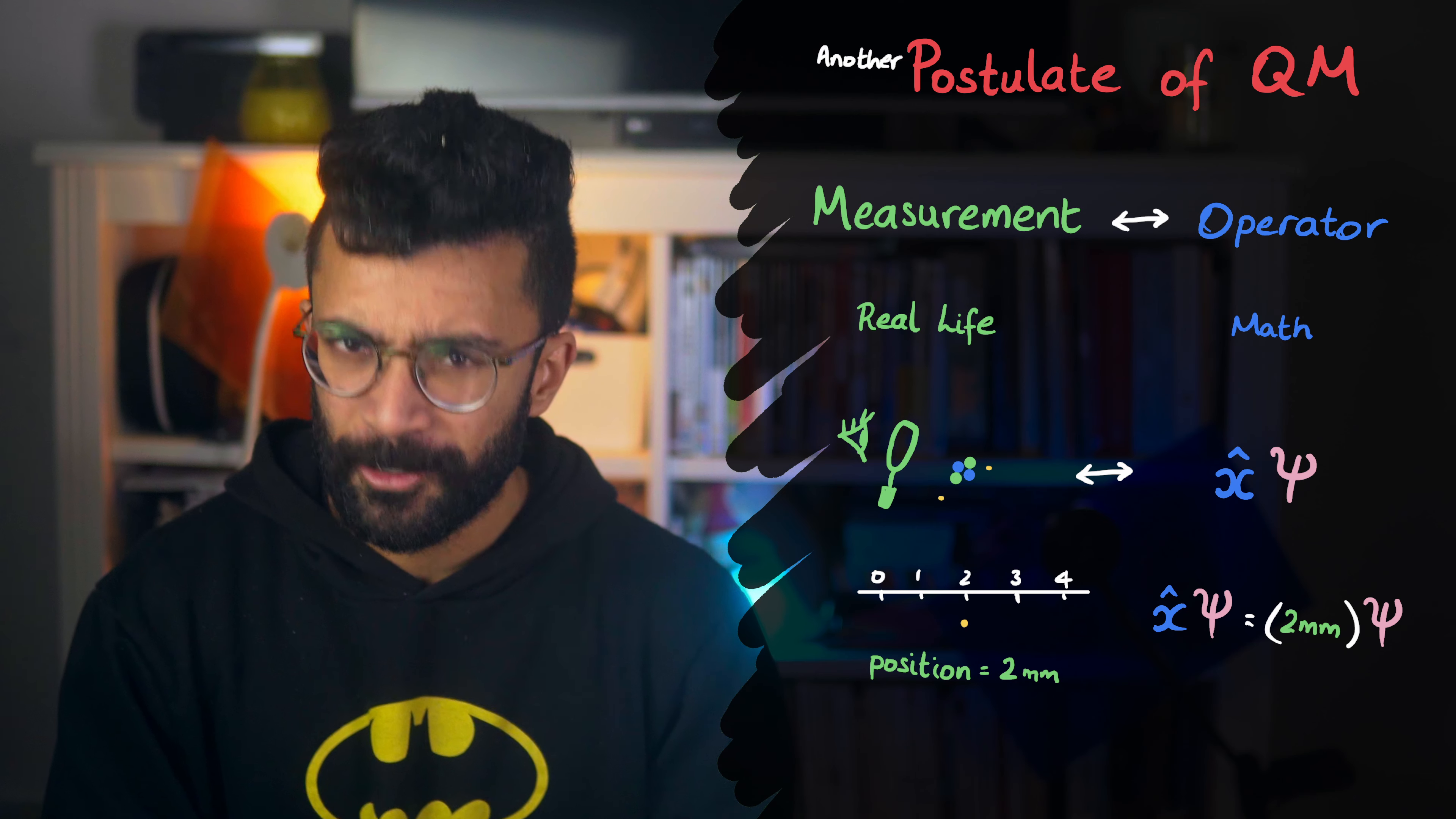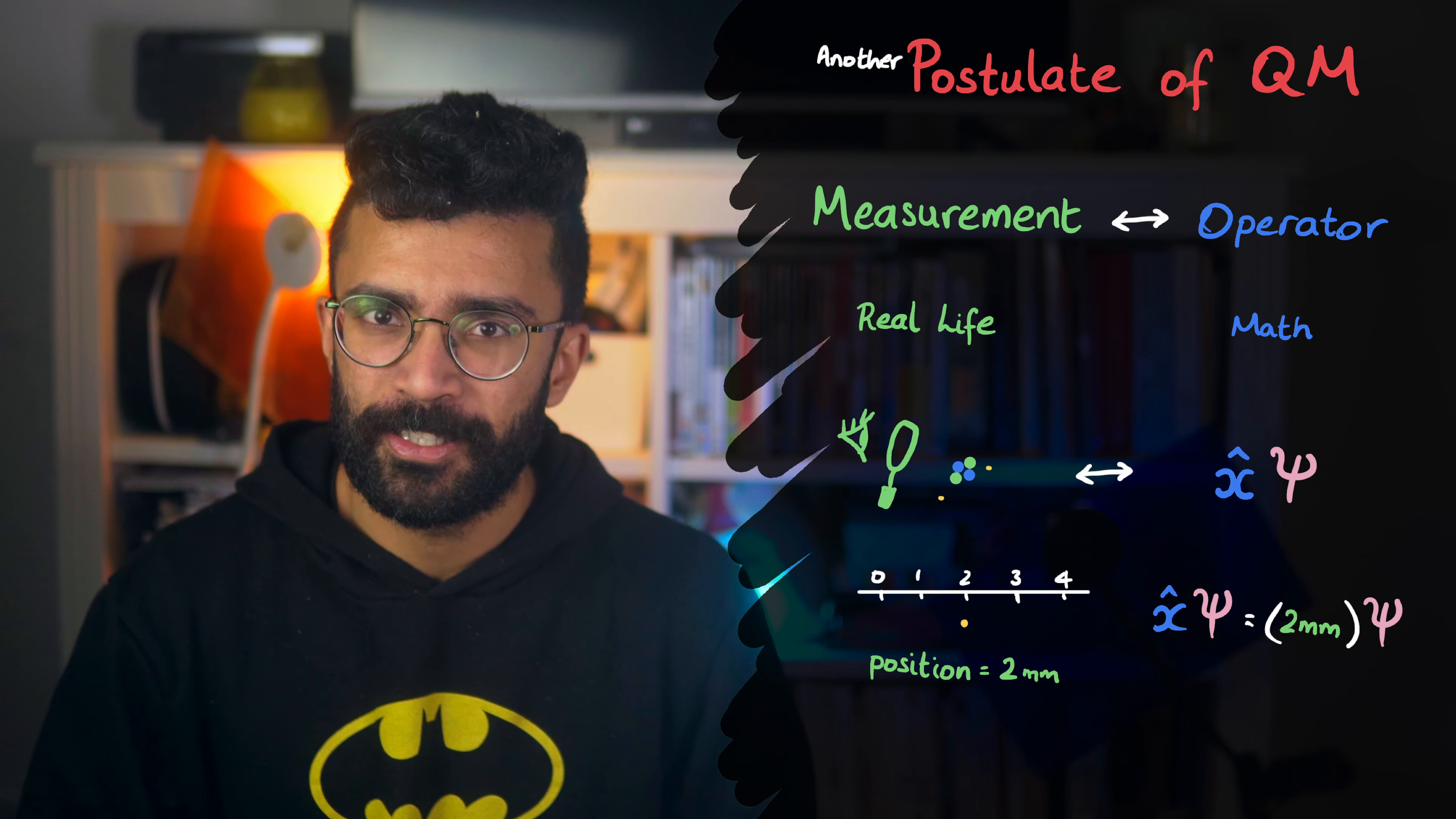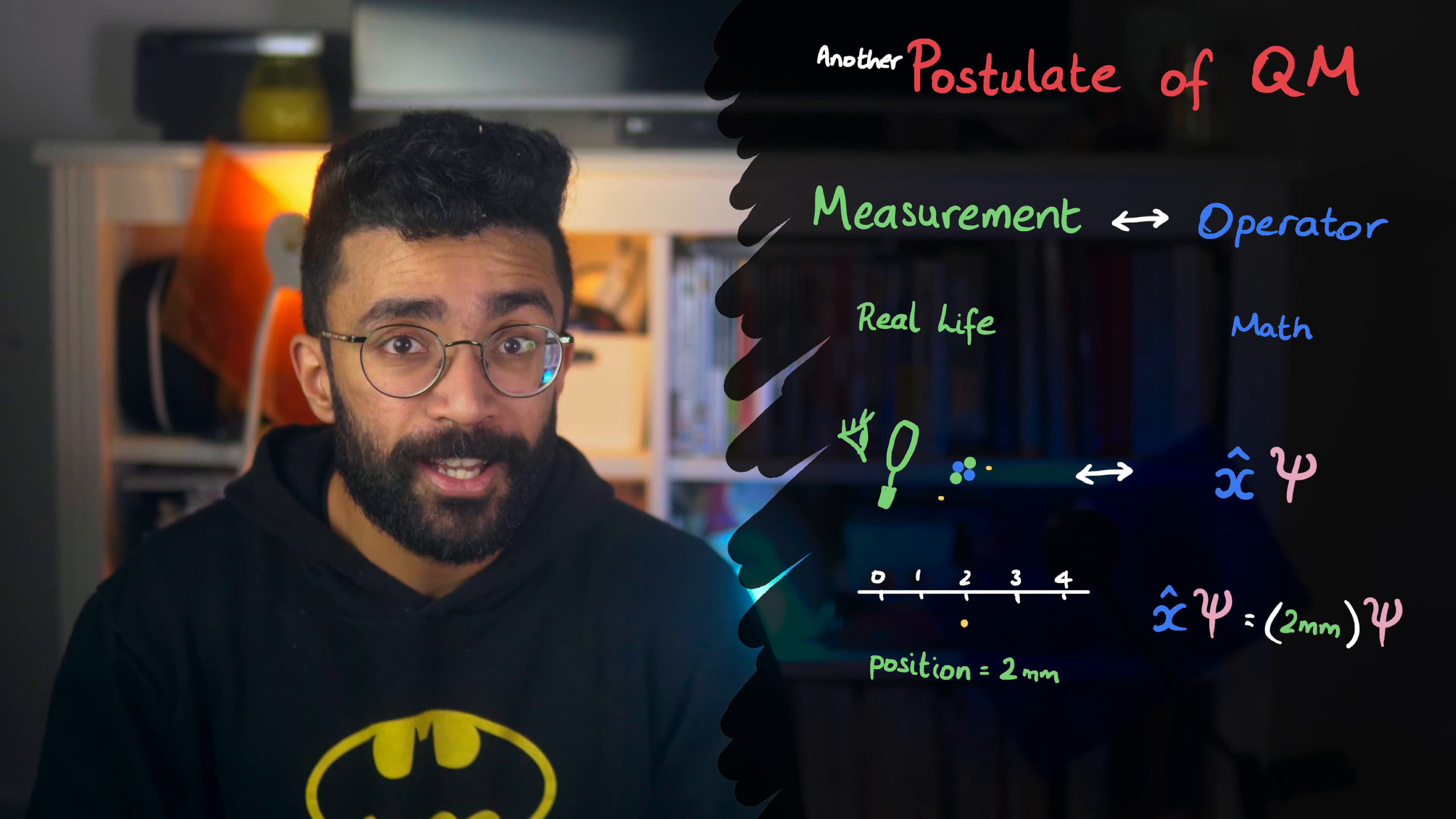It does very little to tell us about the structure and the order of the universe, at least in any way that makes sense to our puny human minds. But mathematically, every single prediction it's ever made has matched closely, if not perfectly, with every experiment ever conducted. So far, we've found no evidence to contradict it. And boy have we tried.